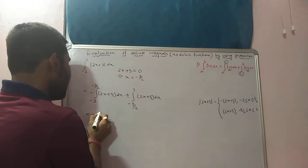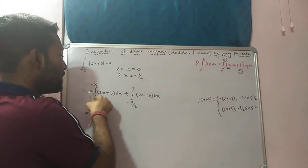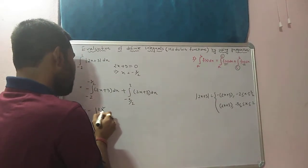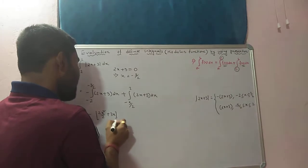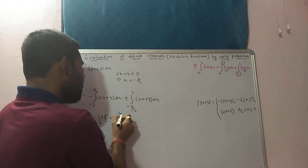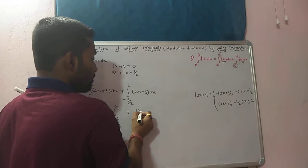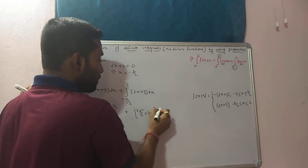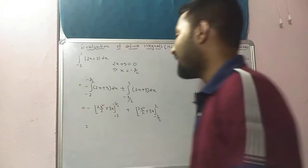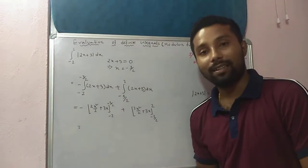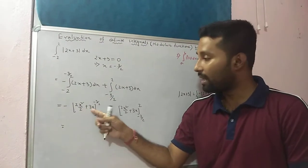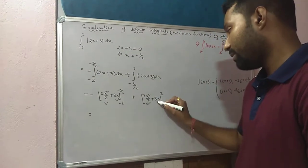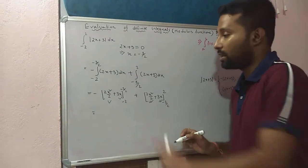Now perform normal integration. Minus 2 times integration of x dx gives x²/2 plus 3x, evaluated from minus 2 to minus 3 by 2. Plus, again 2x²/2 plus 3x evaluated from minus 3 by 2 to plus 2. Now just put in the upper limit and lower limit to get the answer.